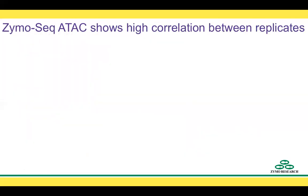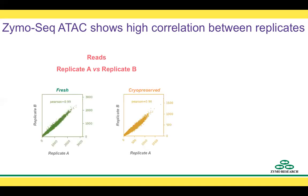Regarding the reproducibility of the assay, ZymoSeq ATACSeq shows high correlation between replicates. To determine correlation, we can look at the reads between replicate A and B. In this comparison, we looked at all the reads that came out of the sequencer after removing duplicates, low mapping quality reads, and mitochondrial reads. We ran DeepTools and chose to see the results in a scatter plot showing the Pearson correlation between replicate A and B for reads set in 100 base pair bins. For both fresh and cryopreserved samples, we obtained high correlation between replicates, which is above 0.98.